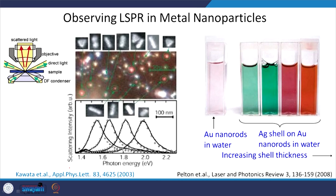How do we observe LSPR in metal nanoparticles? It is done using dark field microscopy. The excitation light coming from certain directions does not go into the scattered light direction — it is blocked — and only the light scattered from the nanoparticles is captured by the camera. You can see different colors corresponding to different shapes and sizes of the nanoparticles, and these correspond to different resonances for different dimensions.